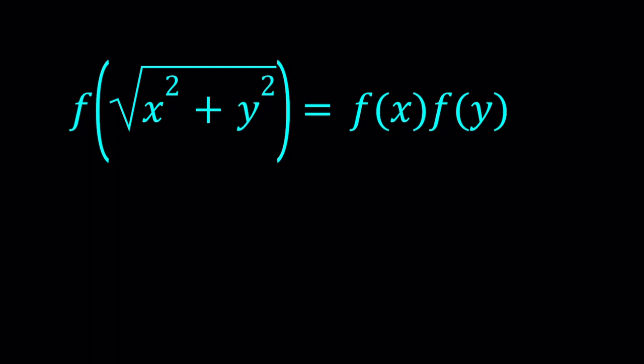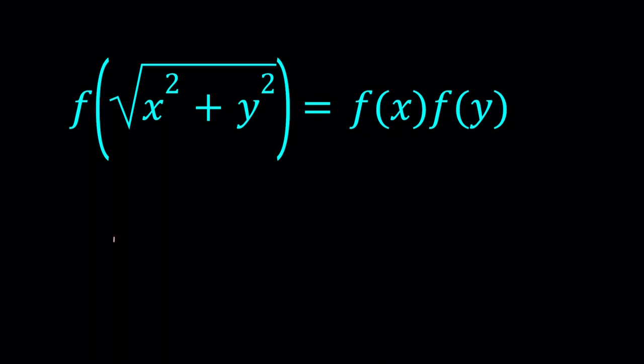We're going to turn this into something we are familiar with using substitution. I don't like the square root inside the parentheses, so let's get rid of that. I know that x is positive, so square root of x is well defined. Let's define f of square root of x as g of x. It's very common with functional equations to define a function in terms of another one to make your equation simpler. In this case, it's a great improvement.